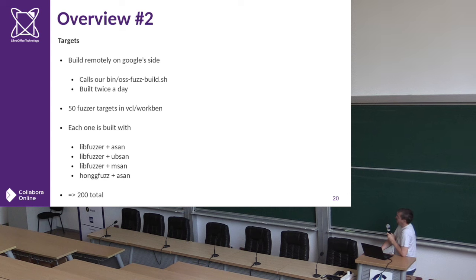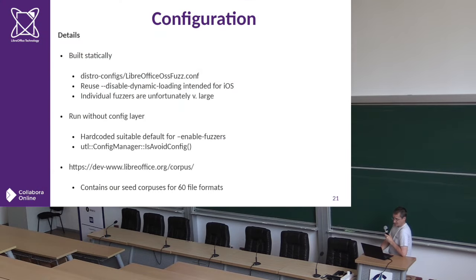Google's fuzzing builds on three or four different engine types with different configurations: address sanitizer, memory sanitizer, and undefined behavior sanitizer. So our 50 fuzzers become 200 different fuzzing processes run 24/7 every day of the year, rebuilt twice a day. The configuration is in our own git repository. Unlike our usual scenarios it's statically built with no dynamic libraries, which is recommended for OSS Fuzz.